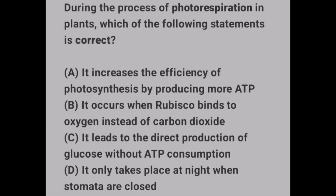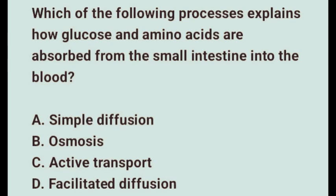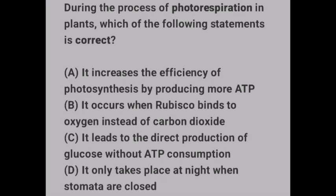Bonus challenge — only the sharpest minds will get this right! During photorespiration in plants, which statement is correct? Option A: it increases the efficiency of photosynthesis by producing more. Option B: it occurs when RuBisCO binds to oxygen instead of carbon dioxide. Option C: it leads to direct production of glucose without ATP consumption. Option D: it only takes place at night when stomata are closed. Drop your answer in the comments — let's see how many of you truly understand plant physiology!